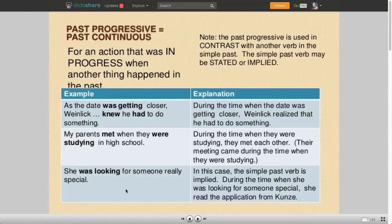You also have this line about Weinlich's sister. She was looking for someone really special. Now, this happens sometimes that the action that interrupts the past progressive is implied and not stated. And what we understand here is that during the time when she was looking for someone special, she read the application from Kunze. But we already know that people were reading applications, so I don't mention that.